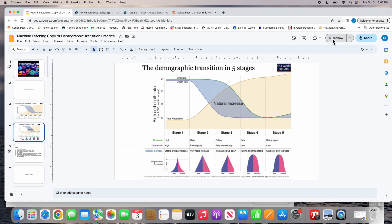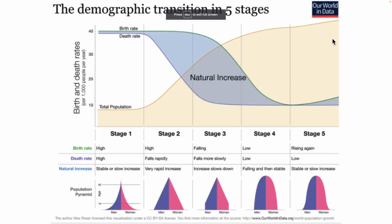Now that you've watched the overpopulation video, pull up the graph section of 2.2 — it's on the backside. AP expects that you can look at either the classic line graph of the demographic transition with the five stages, or a population pyramid, and identify what stage a country is in and what benefits or drawbacks that country faces regarding its population and population growth.